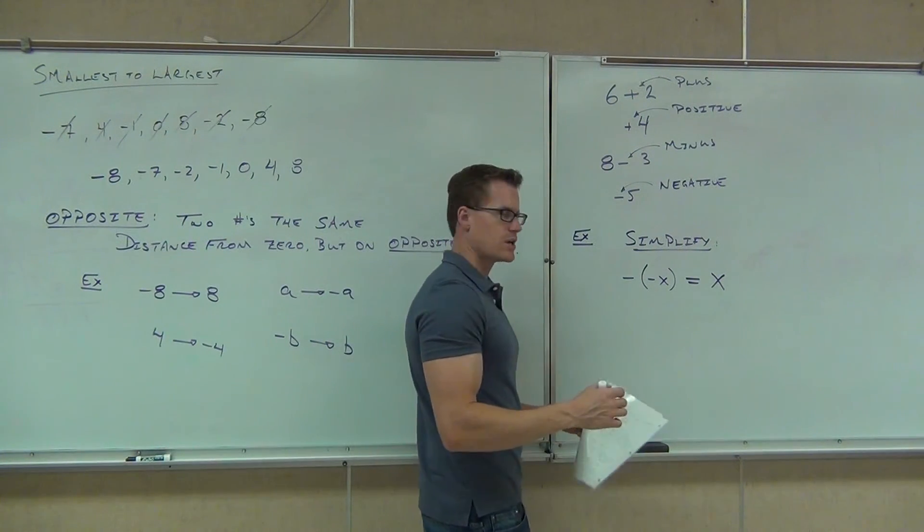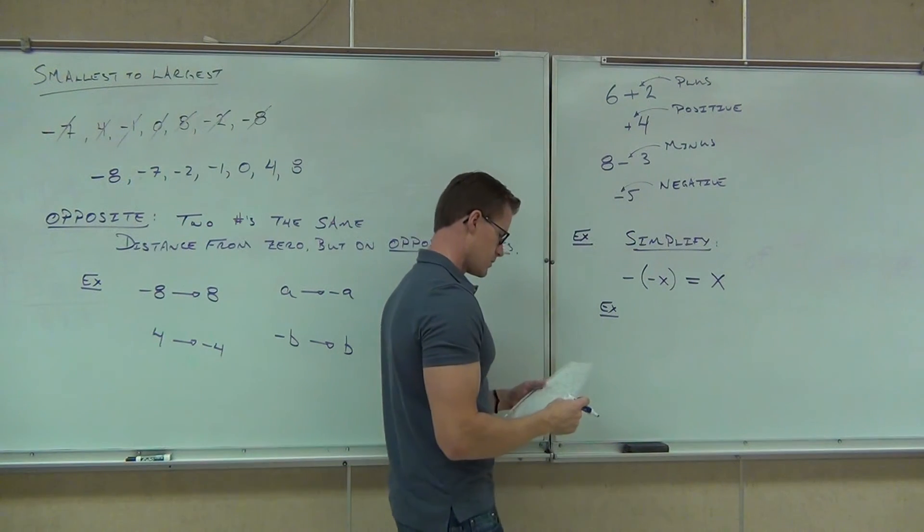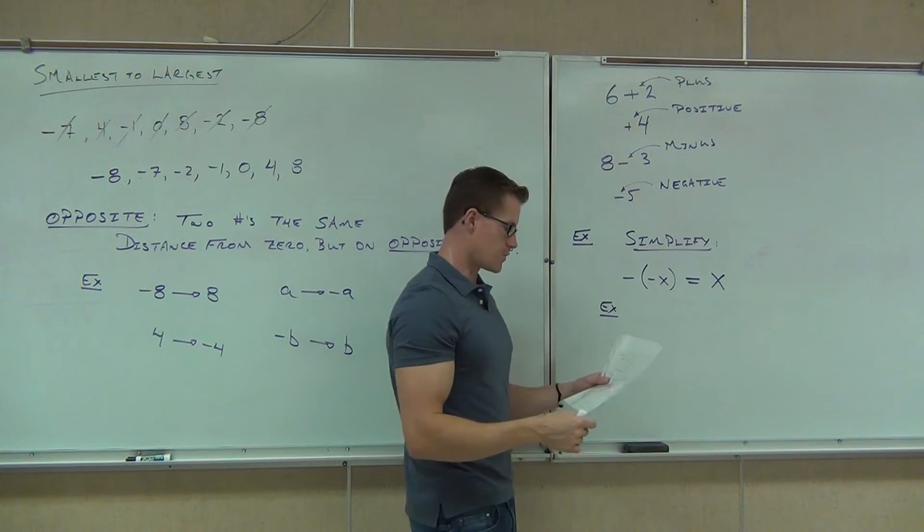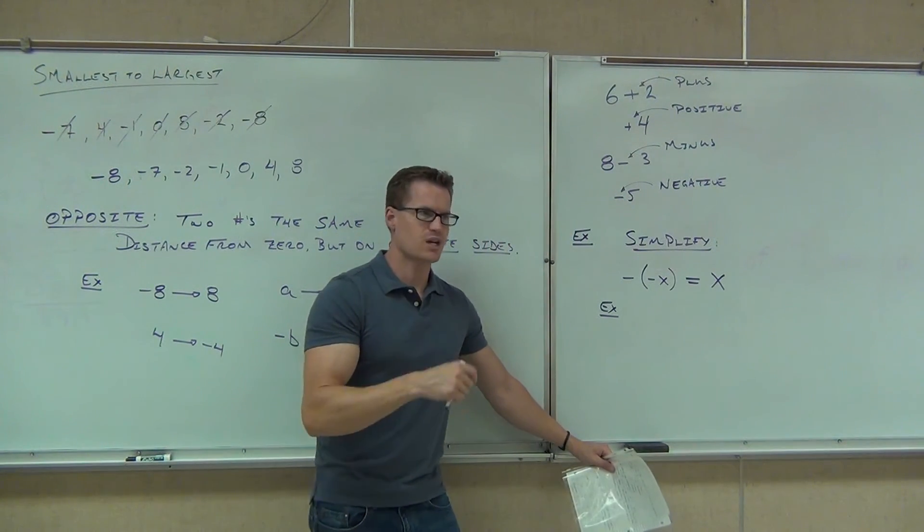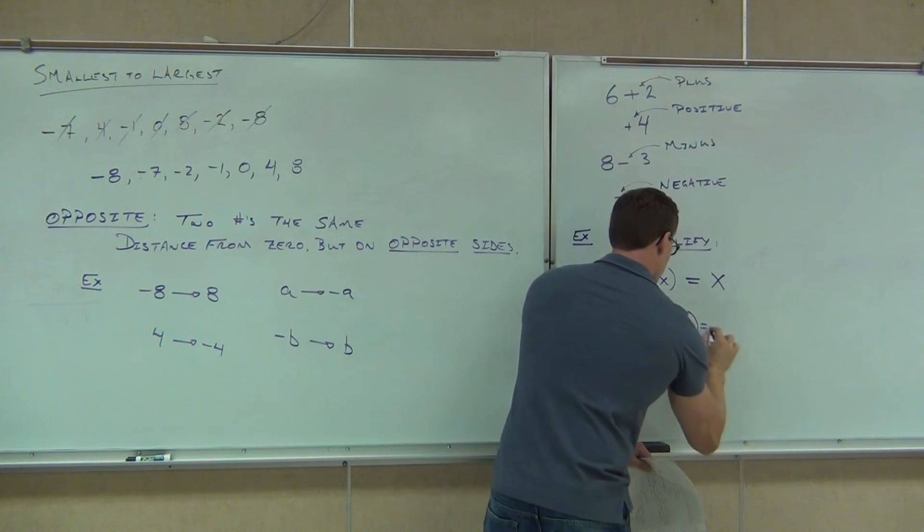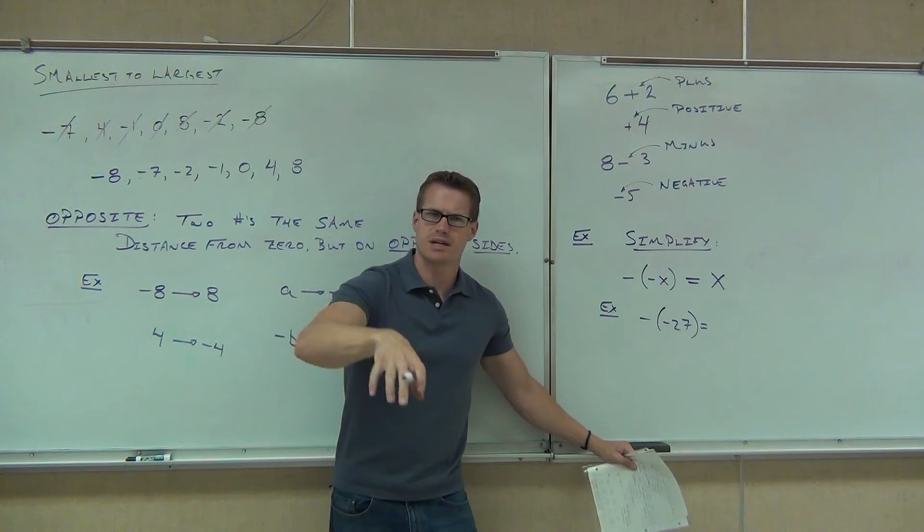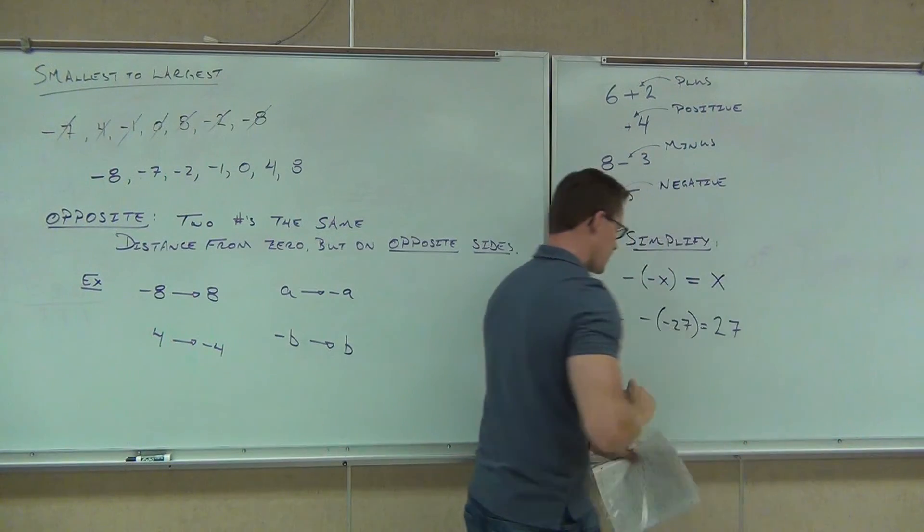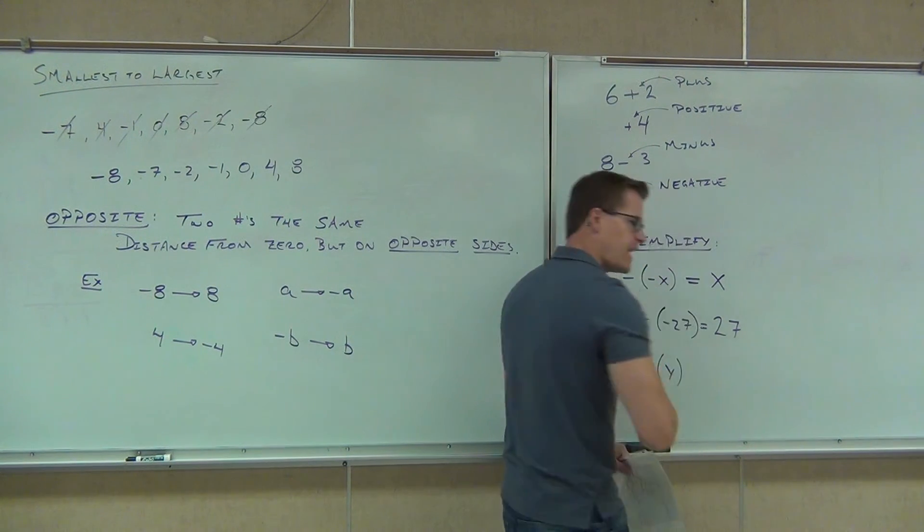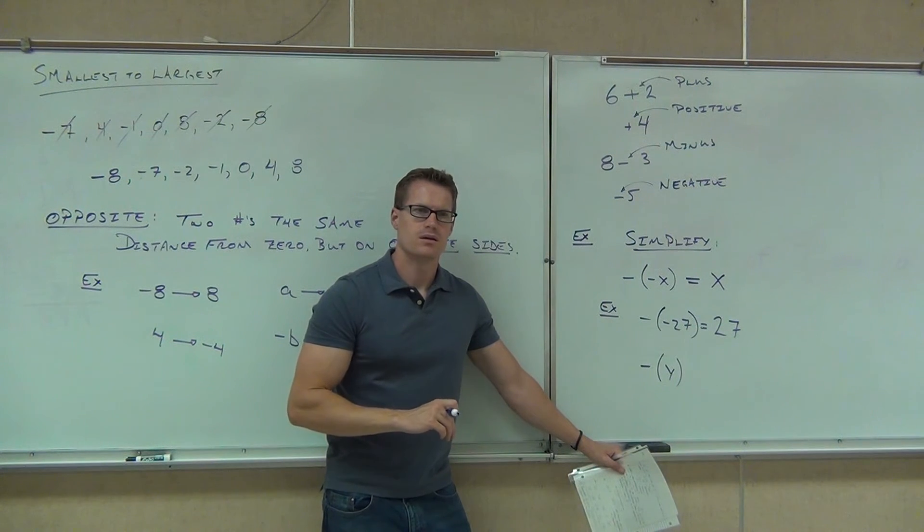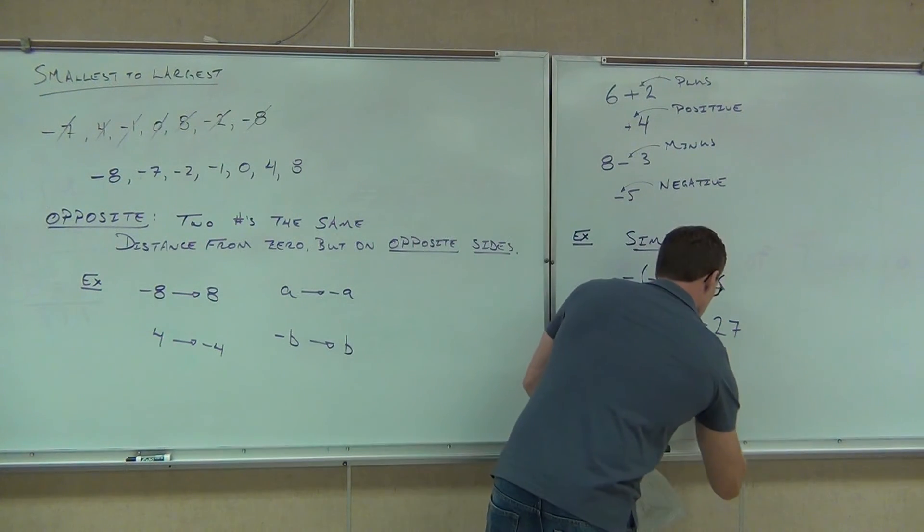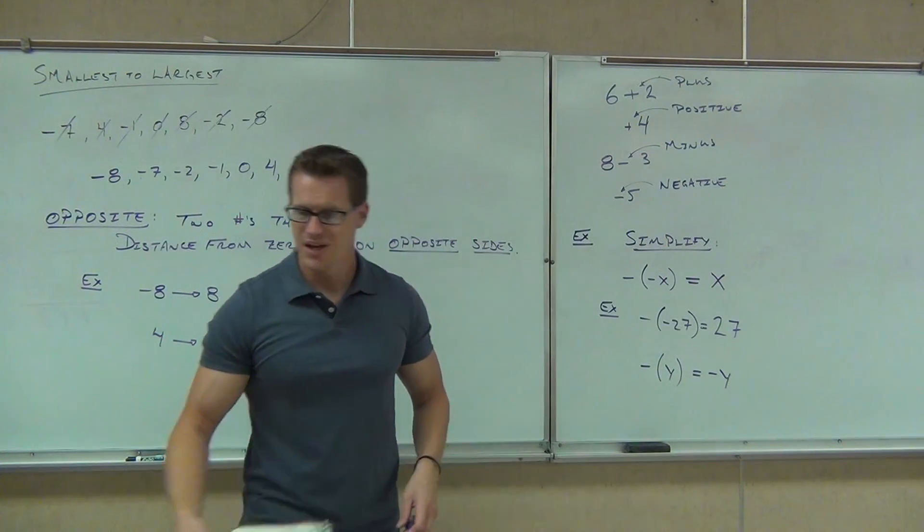Let me give you a few examples to illustrate this. How much is negative negative 27 or the opposite of negative 27? Positive 27. Good. How about that? Yeah, negative one. What it says is the opposite of y or negative y in this case. Here's one that's going to blow your mind maybe.